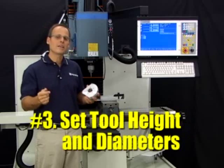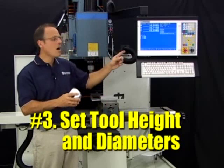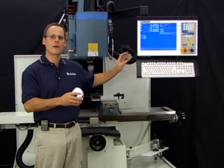Number three, get those tools in tool holders, load them up in the machine, and get the height and diameter offset values set up in the tool library.